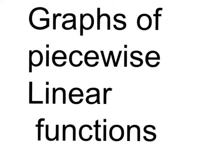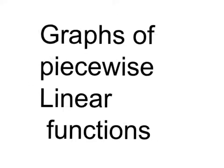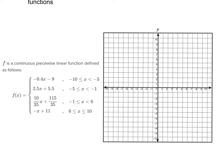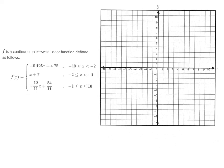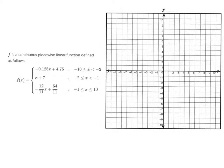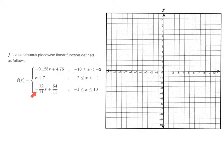What we want to do today is simple: we want to be able to graph a linear piecewise function. I'm going to work two examples with you. Let's do this one first because it's a little bit easier. I've got this piecewise function f of x, and from negative 10 to negative 2 it's defined with one function, from negative 2 to negative 1 with another, and from negative 1 to 10 with another. Since it's linear, it's a straight line between each section.